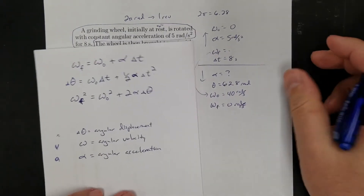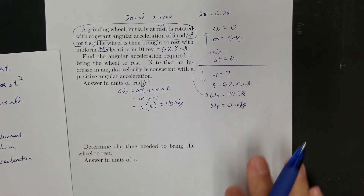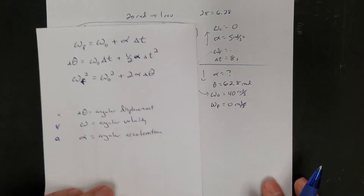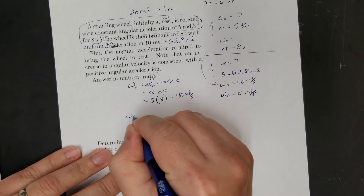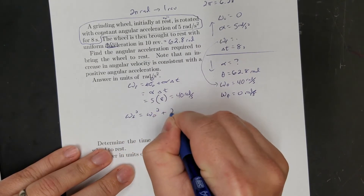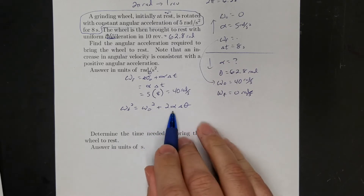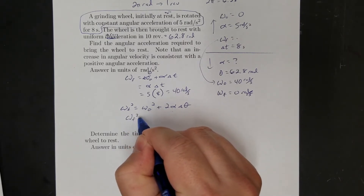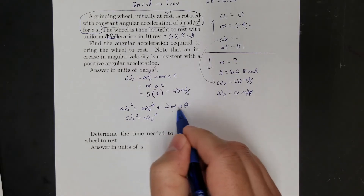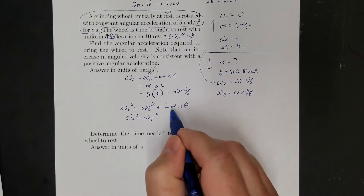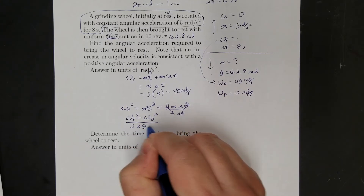Now for the slow-down phase, I have theta, omega-initial, and omega-final, but I don't have time. So I need the equation without time: final squared equals initial squared plus 2 alpha times angular displacement. I need to solve for alpha — subtract initial squared over, giving final squared minus initial squared equals 2 alpha delta theta, then divide by 2 times delta theta to isolate alpha.